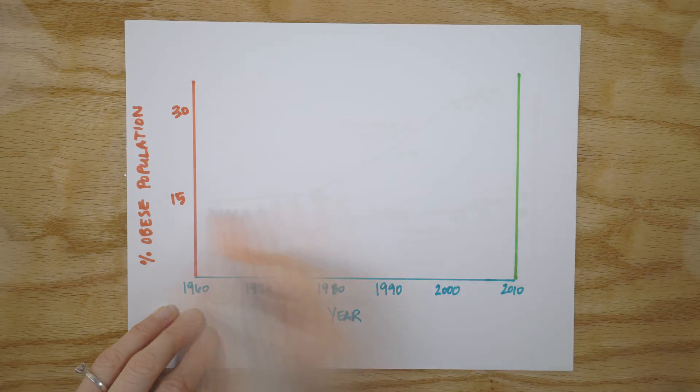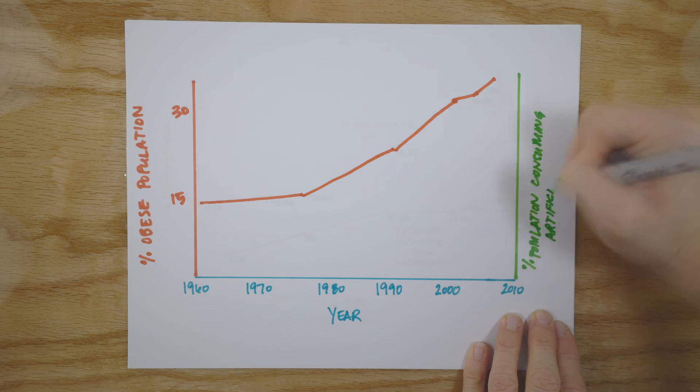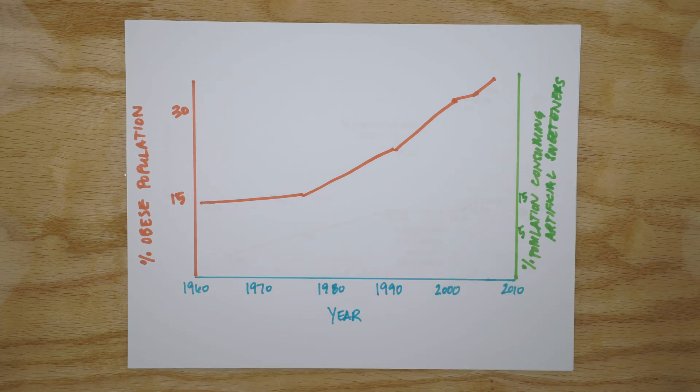Since diet sodas have been introduced in the U.S., obesity prevalence has continued to increase. But we can't assess causation from correlation, so let's take a look at the data a little bit more closely. In controlled intervention studies, human subjects are given either regular or diet soda, and then they go about their daily lives.